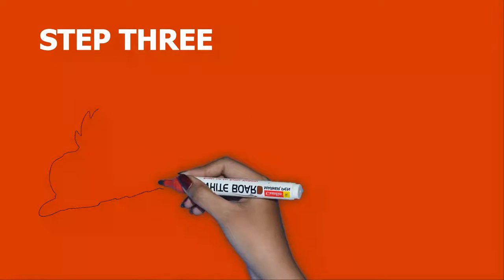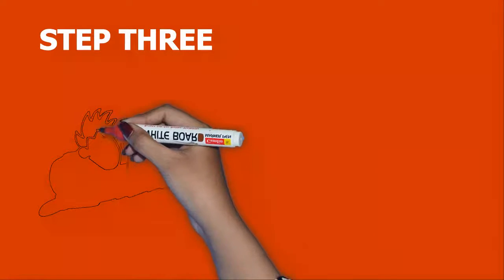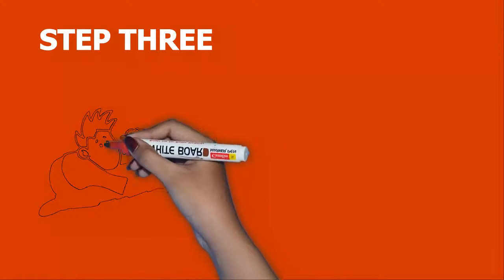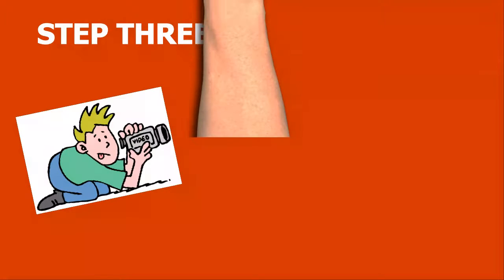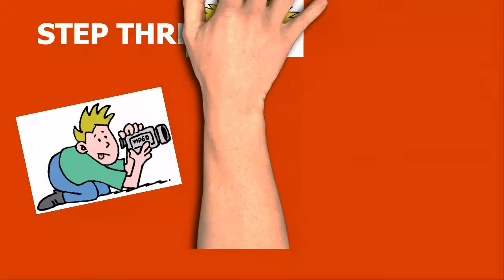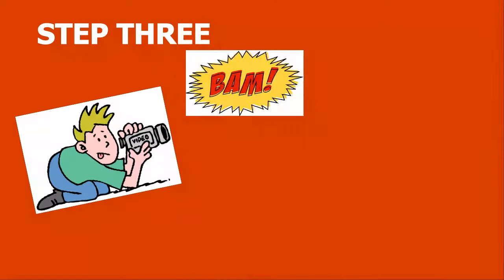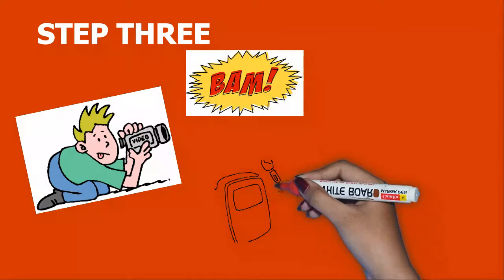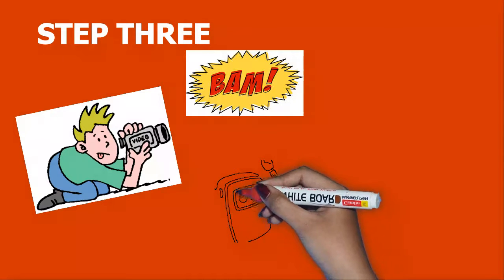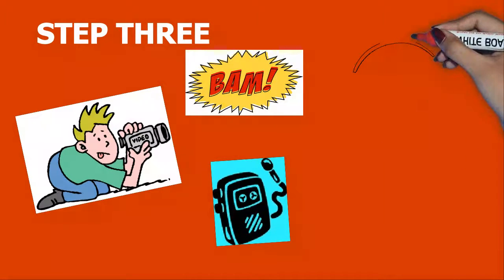Step 3. A camcorder that can shoot brilliant video is what you need. Remember to record the ambient sound — you can always remove it during editing. You will also need an audio recorder to record the narration.